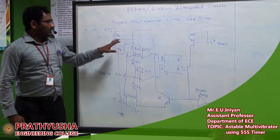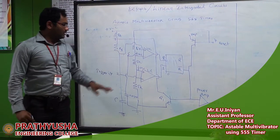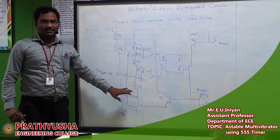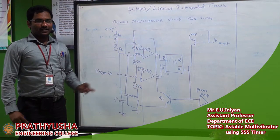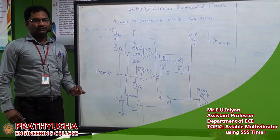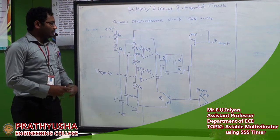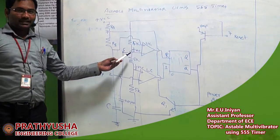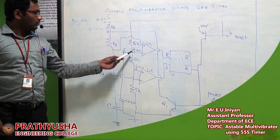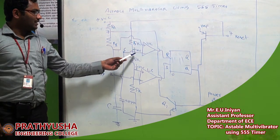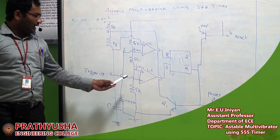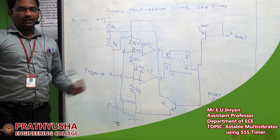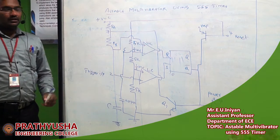Basically, the 555 timer consists of three 5kΩ resistors, which will act as a voltage divider network, and it will provide the bias voltage of 2/3 Vcc to the upper comparator and 1/3 Vcc to the lower comparator.